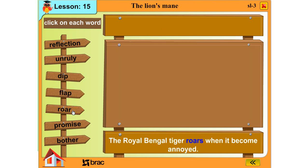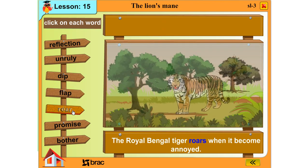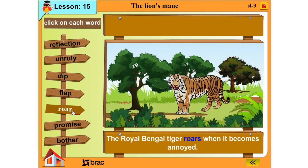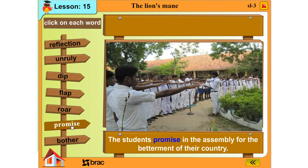Roar: The royal Bengal tiger roars when it becomes annoyed. Promise: The students promise in the assembly for the betterment of their country.